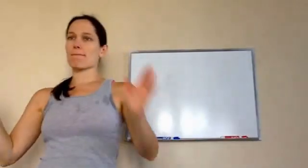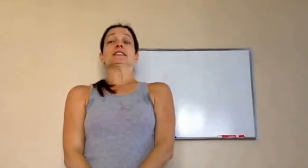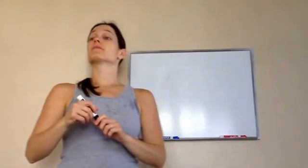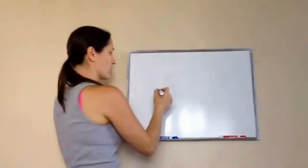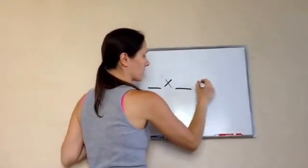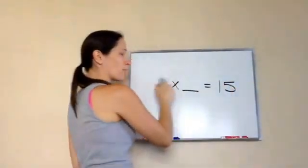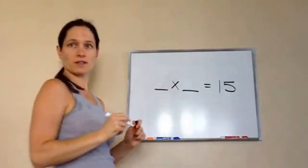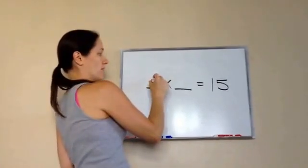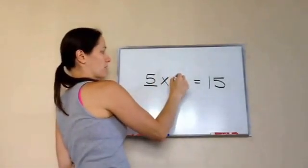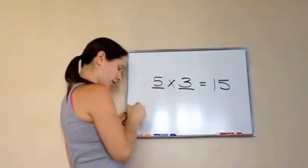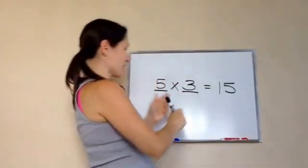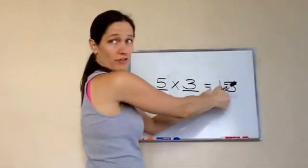Now, do you remember what a factor is? The numbers included in a multiplication problem. Yes, very good. So if I said something times something equals 15, what would be some factors of 15? 5 times 3? Very good. So these are two factors of 15, right?